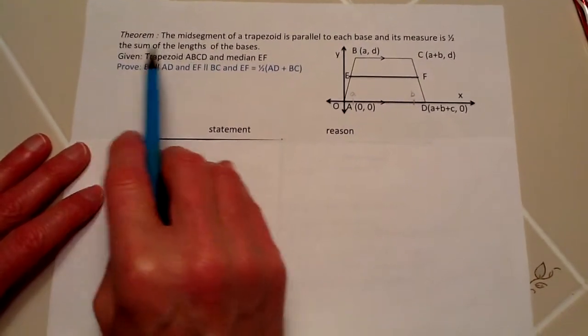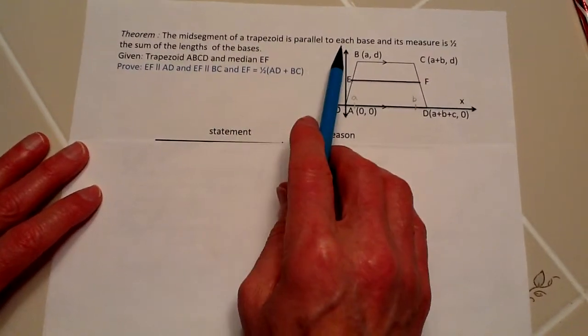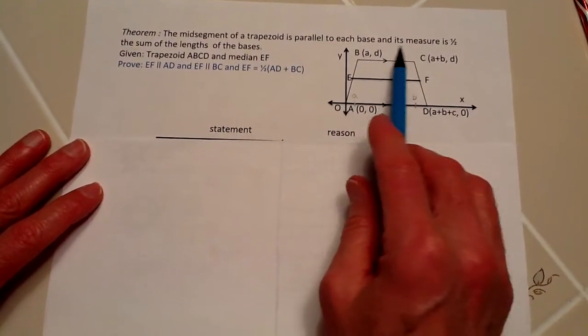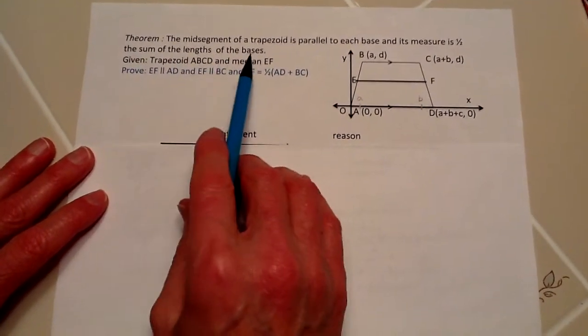Now we're going to prove the theorem that the mid-segment of a trapezoid is parallel to each base and its measure is one-half the sum of the lengths of the bases.